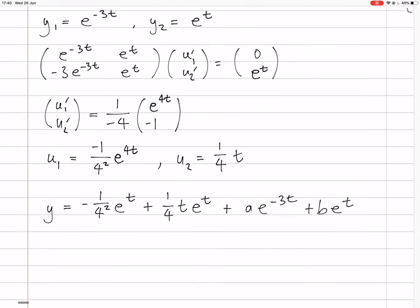So actually, this isn't useful because this shows us that the u1 y1 gave us that e^t, which can actually be absorbed into the homogeneous b e^t part. So we could rewrite this as (1/4)t e^t + a e^(-3t) + c e^t.